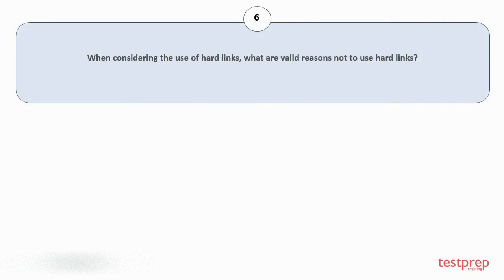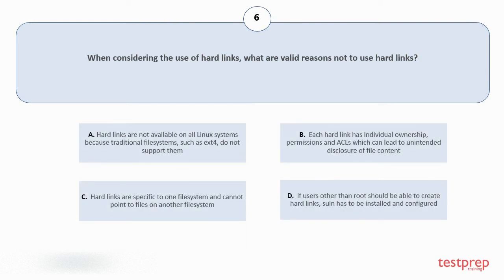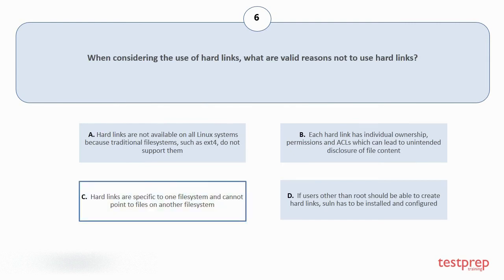Question number 6: when considering the use of hard links, what are valid reasons not to use hard links? Your options are: a. Hard links are not available on all Linux systems because traditional file systems such as ext4 do not support them. b. Each hard link has individual ownership, permissions and ACLs which can lead to unintended disclosure of file content. c. Hard links are specific to one file system and cannot point to files on another file system. d. If users other than root should be able to create hard links, Soln has to be installed and configured. The correct answer is option C.